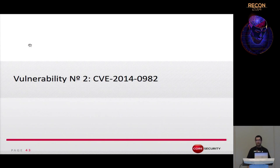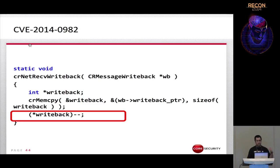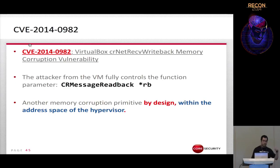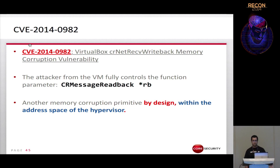The second vulnerability is closely related to the first and also results from network pointers. It's in the function handling CR_message_writeback. The attacker from the VM fully controls the only parameter, and as highlighted in the code, the attacker can decrement the value stored at any memory address within the address space of the hypervisor — another memory corruption primitive allowing modification of any memory address in the hypervisor.